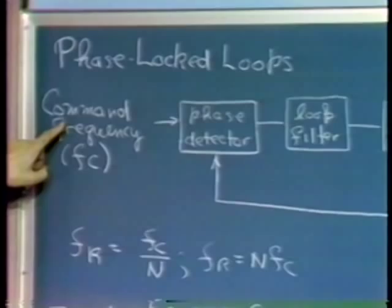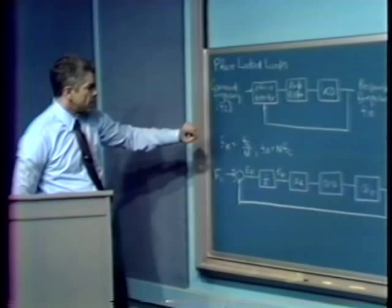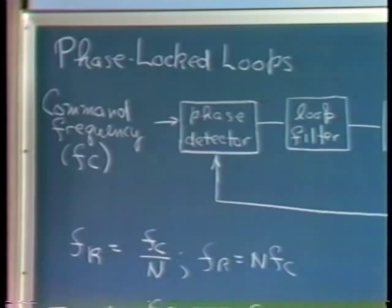Hi. Today I'd like to discuss a specific kind of electronic feedback system called a phase-locked loop. The general topology for a phase-locked loop is shown on the board. The input to this type of system is a command frequency, and the information we're interested in is specifically its frequency.